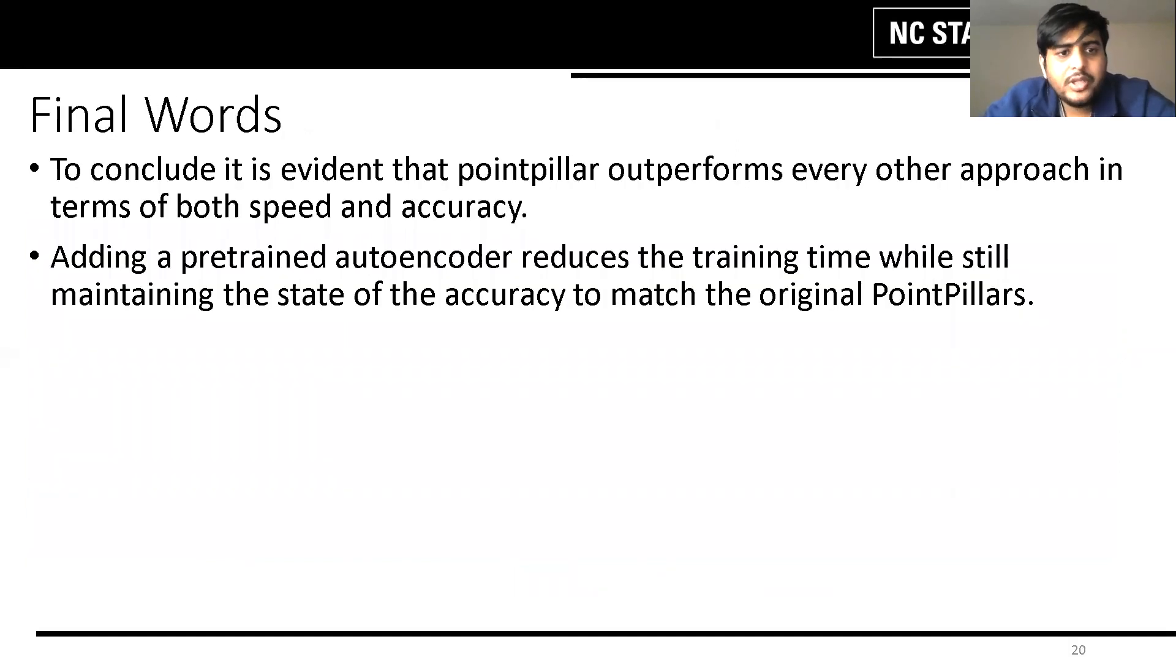To conclude, it is evident that point pillar outperforms every other network in terms of both speed and accuracy. Adding a pre-trained auto encoder reduces the training time while still maintaining the state of the accuracy to match the original point pillar.